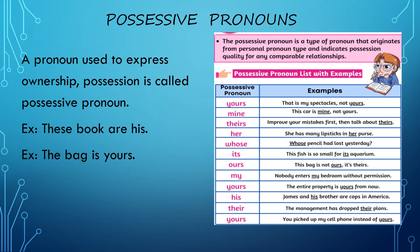Possessive pronoun. A possessive pronoun is a word or pronoun that is used to express ownership or possession — it indicates which particular thing belongs to which person. For example: these books are his. In possessive pronouns we use S — theirs, yours, its, ours — but not apostrophe S, only S. His already ends with S, so we keep it as his. These books are his. The bag is yours.